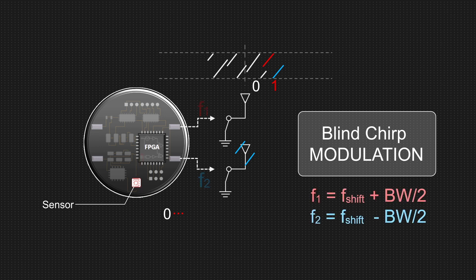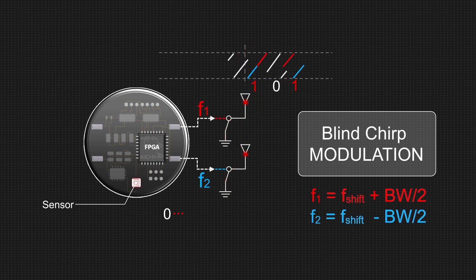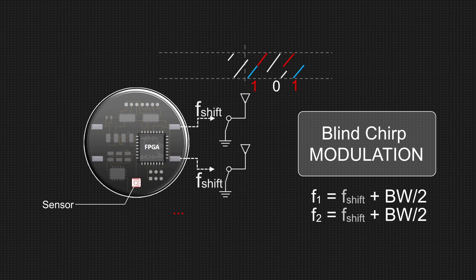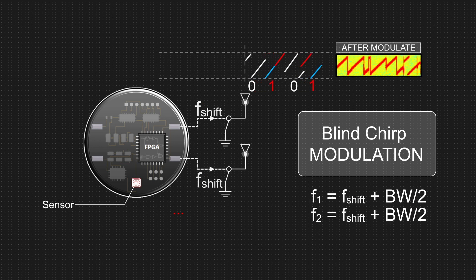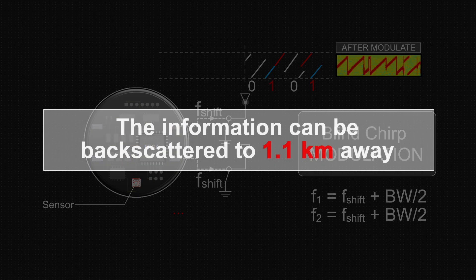The selective frequency shifting is accomplished with a square wave digital baseband signal from an FPGA that modulates the incoming baseband using FSK.